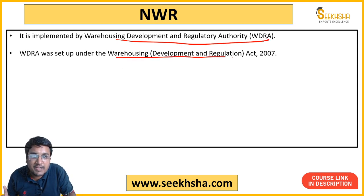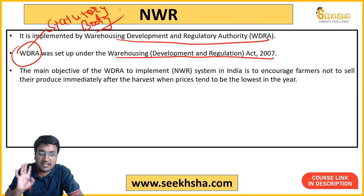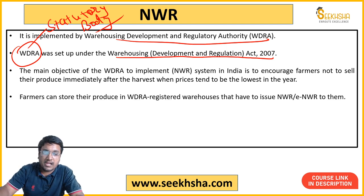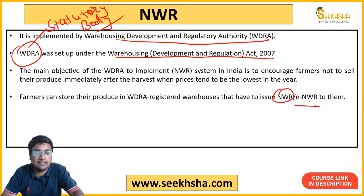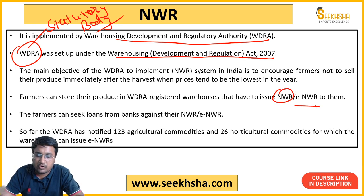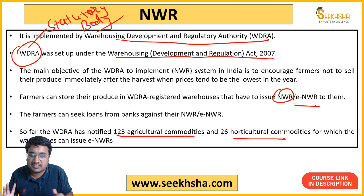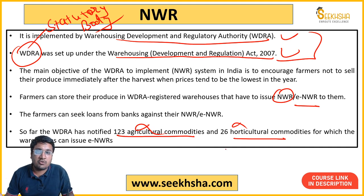WDRA's main objective is to encourage farmers to use registered warehouses to store their goods and obtain NWR or ENWR, against which they can take loans. So far, 123 agricultural commodities and 26 horticulture commodities have been notified for this scheme. You don't need to memorize those exact numbers, but you should be aware of the WDRA authority.